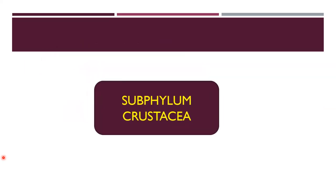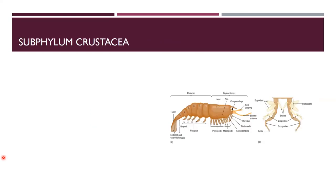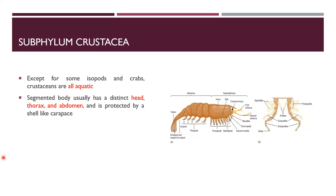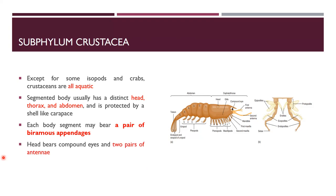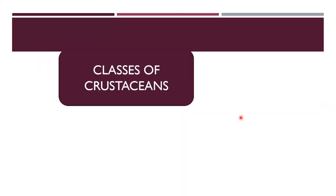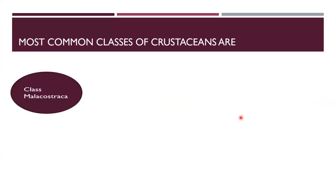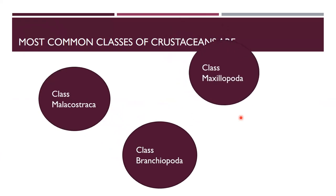Now we are moving towards the third subphylum, Crustacea. In subphylum Crustacea there are two pairs of antennae and compound eyes present. The classes of crustaceans include class Malacostraca, class Branchiopoda, and class Maxillopoda.